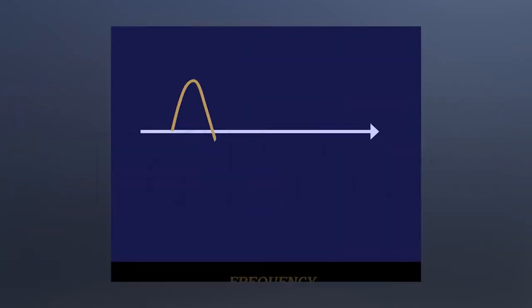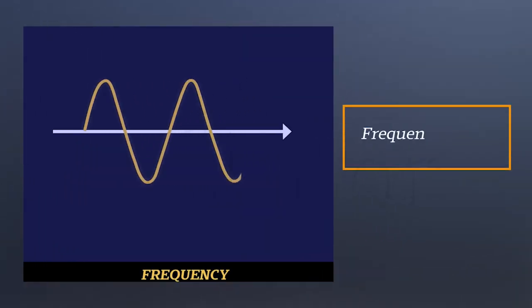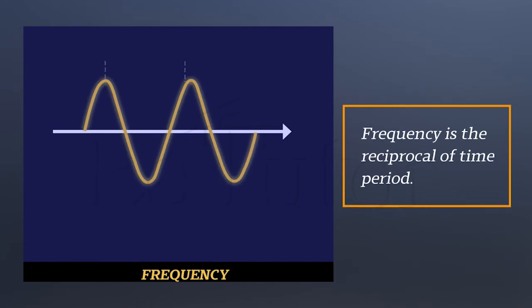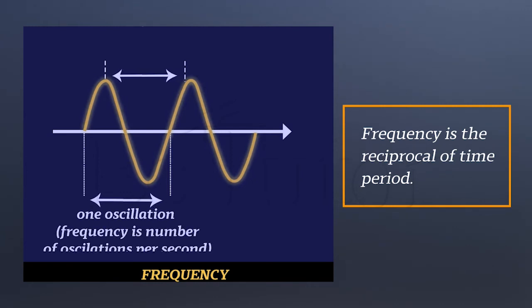Next is frequency. Frequency is the reciprocal of time period. As I said a moment ago, in a time period, we calculate the time required to complete one vibration. But in frequency, we consider time as one unit, which means that the frequency is the number of vibrations completed in one second.